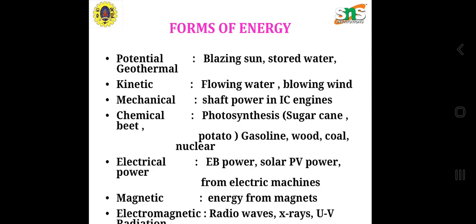Different forms of energy include potential energy, kinetic energy, mechanical energy, chemical energy, electrical power, magnetic and electromagnetic radiations. Potential energy is stored energy - examples include blazing sun, stored water, geothermal energy. Kinetic energy is energy in motion. Flowing water from a dam can produce electricity. Similarly, blowing wind can rotate the blades of wind turbines which in turn create electricity from the kinetic energy of wind.